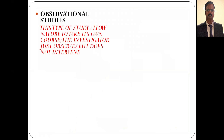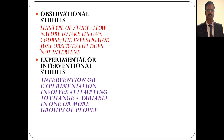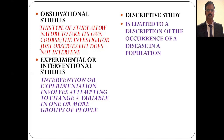Observational studies allow nature to take its own course — the investigator just observes and does not intervene. Undergraduates must be very clear about defining observational studies and using the correct keywords when answering exam questions. Experimental or intervention studies involve attempting to change a variable in one or more groups of people — the investigator performs some intervention among one or more groups.